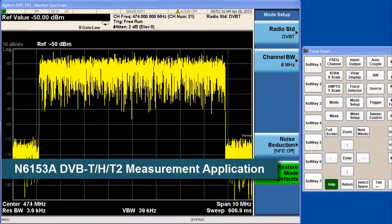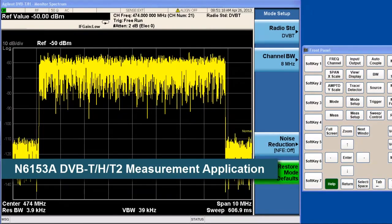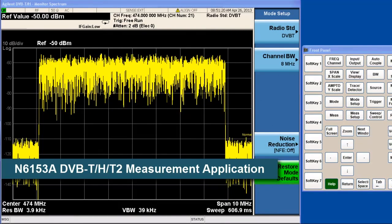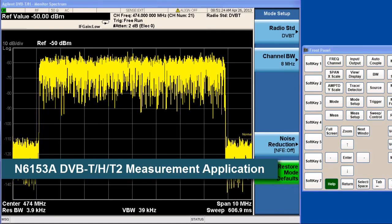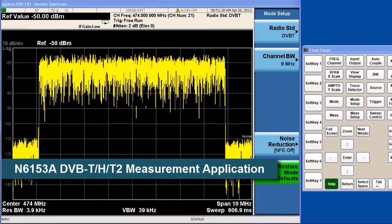The output of DVB-T2 signal from the MXG is directly connected to the signal analyzer. The N6153A DVB-T2 measurement software provides one button standard test power and modulation analysis. The first thing I would like to do is to give you an overview of the N6153A measurement application on the MXA signal analyzer.